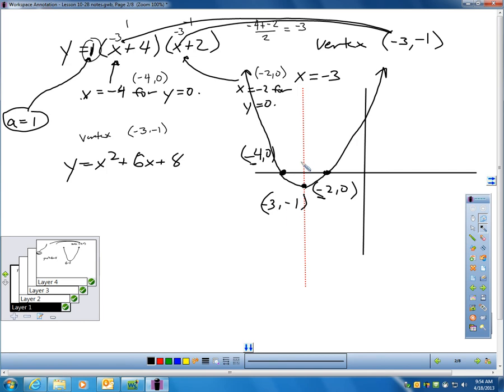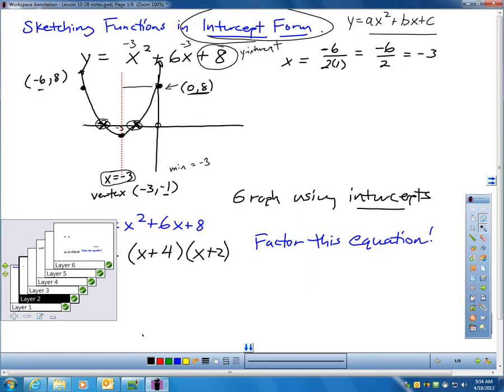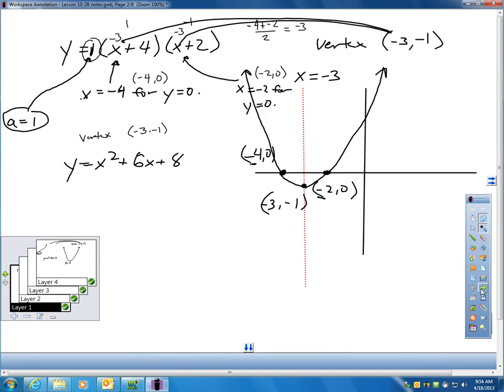It's the exact same graph, it's just that it was sketched in a different way, or I had different points utilized because I had a different form of equation. So you can see I'm getting the same graph either way. I just had a couple different points labeled. By the way, I don't want to forget, this graph still has that same minimum of negative 1.